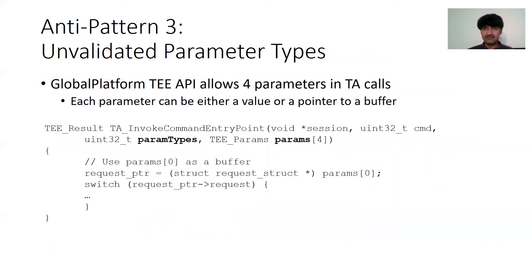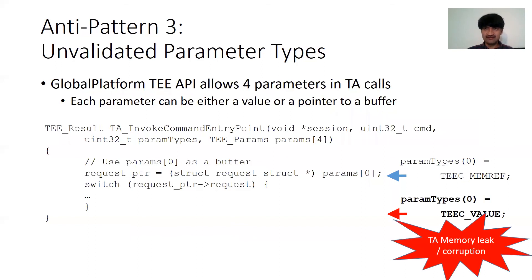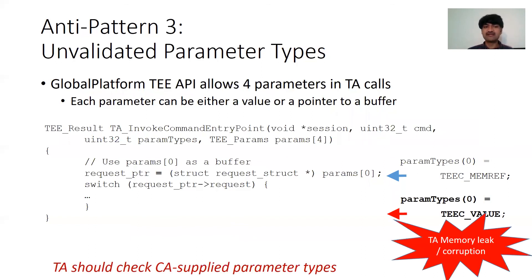The third pattern was quite similar. The GlobalPlatform API allows four parameters to the TA in a single call, and each parameter can be either a value or a buffer. If a TA expects the first parameter to be a buffer, a malicious client could supply a value instead, and that value could point anywhere in the TA's memory, leading to similar consequences as the previous pattern. Therefore, the TA should check that CA-supplied parameter types match what the TA expects.